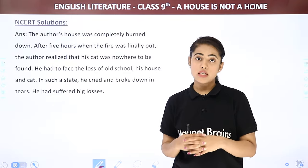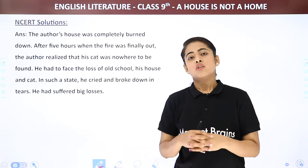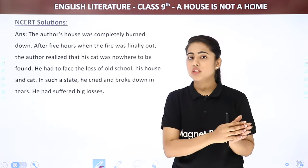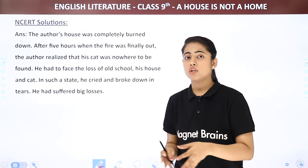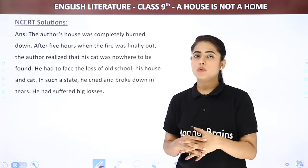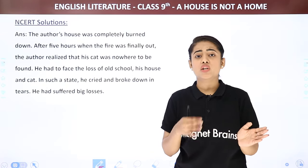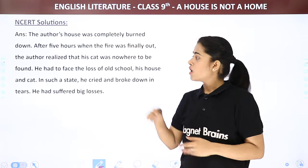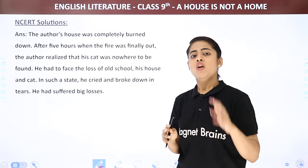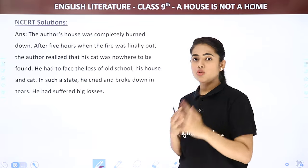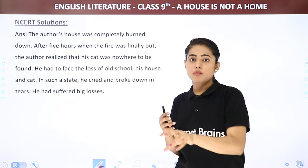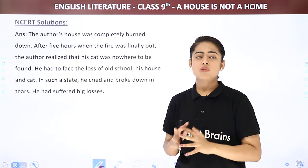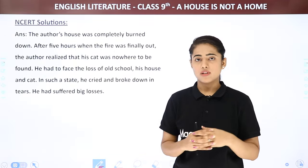For a long answer type question, you should narrate the full incidents. Begin by saying the author was in tears because he had suffered a lot of losses recently. Then mention loss number one — the old school; loss number two — the house getting burnt; loss number three — the cat. Do not mention it in points — in literature or English, paragraphing is recommended. This is the way you can begin the answer and continue it, giving a brief about each loss. Around eight to ten sentences — you can write this answer as a long answer type question.